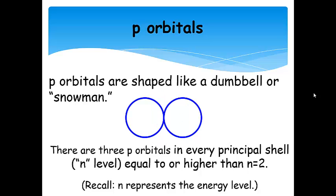P orbitals are shaped like a dumbbell or a snowman. There are three P orbitals in every principal shell, but it has to be equal to or higher than N equals 2. N equals 1 does not have P orbitals at all, but everything higher than N equals 2 does have P orbitals. We're going to see why that is when we talk about quantum numbers.